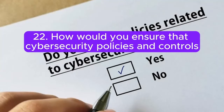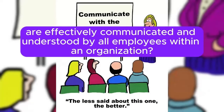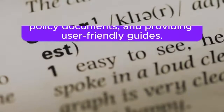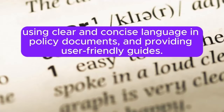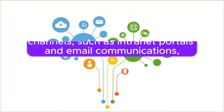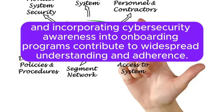Question 22: How would you ensure that cybersecurity policies and controls are effectively communicated and understood by all employees within an organization? Answer: Effective communication involves conducting regular training sessions, using clear and concise language in policy documents, and providing user-friendly guides. Utilizing multiple communication channels, such as intranet portals and email communications, and incorporating cybersecurity awareness into onboarding programs contribute to widespread understanding and adherence.